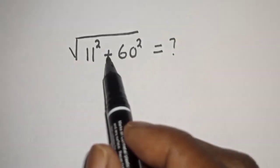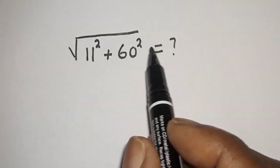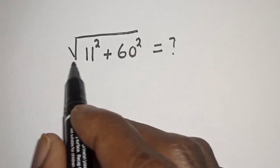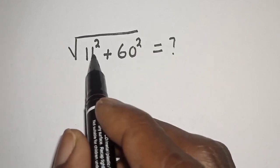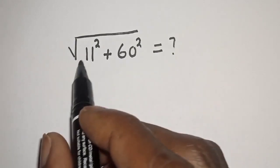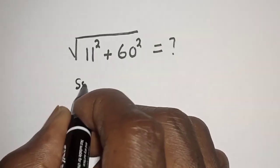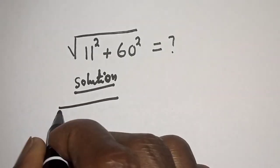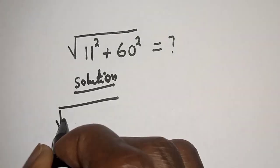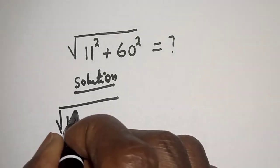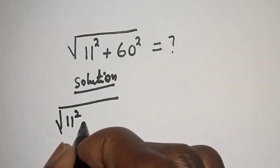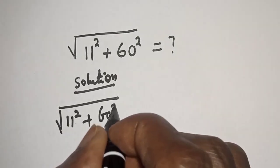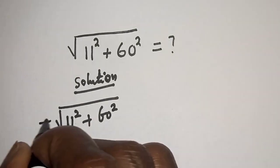We want to evaluate the square root of 11 squared plus 60 squared. Let's find the solution to this radical problem.